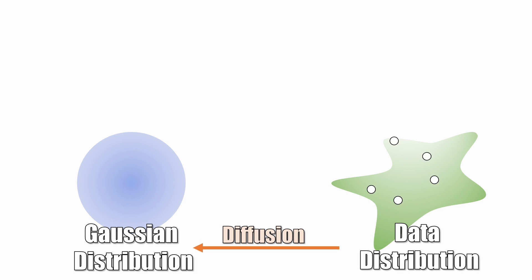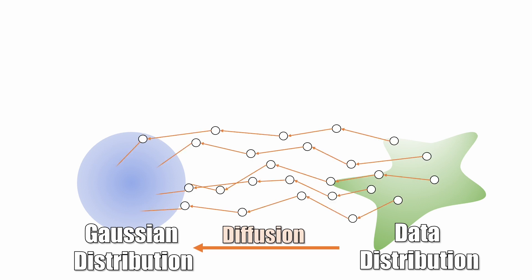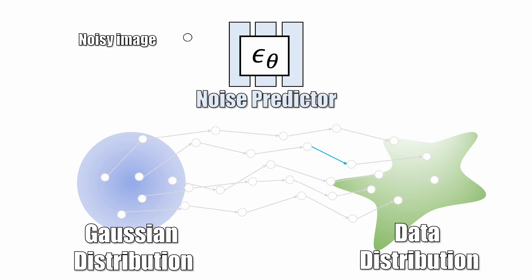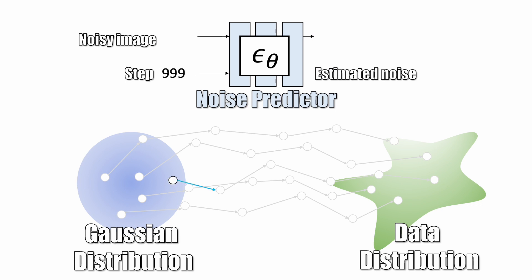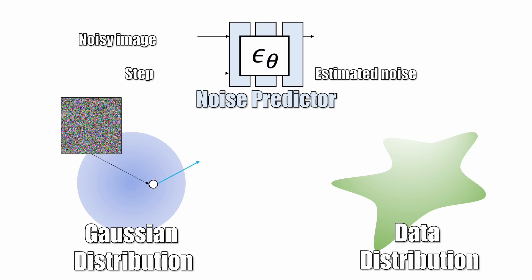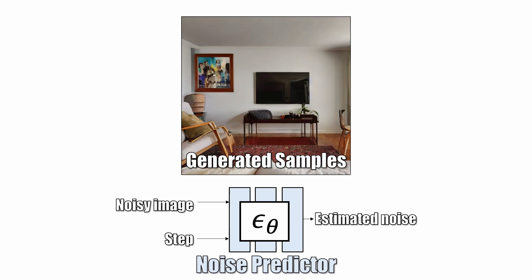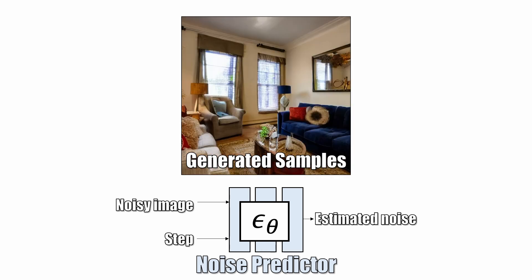Let's collect many data samples and create many such paths. Now we have the training data for training a noise predictor network. The noise predictor takes a noisy image and a step on the path as input, and estimates what was the added noise from the previous step. After training, we can use the noise predictor to transform a noise sample to a data sample by following the predicted path. We can use this model to generate high-quality samples of random scenes.